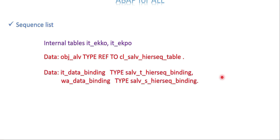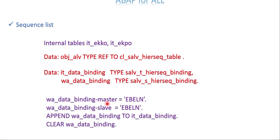Next I need a declaration for an internal table and work area holding the binding information. The sequence is nothing but header and item, so what is the binding between those data? In our example it is the purchase order number that binds the header and item information. Sometimes you may have more than one field to bind between header and item. Depending on your business need, one or more fields can be held in this internal table.